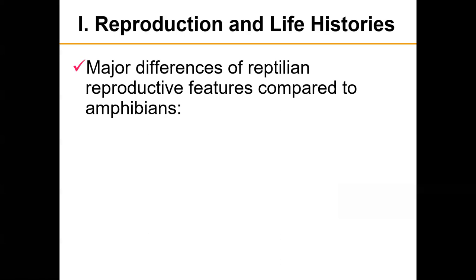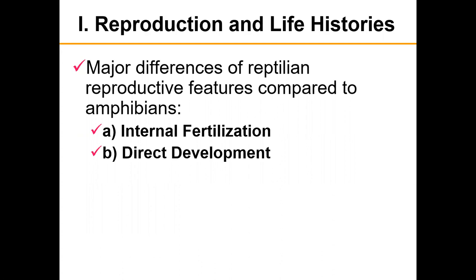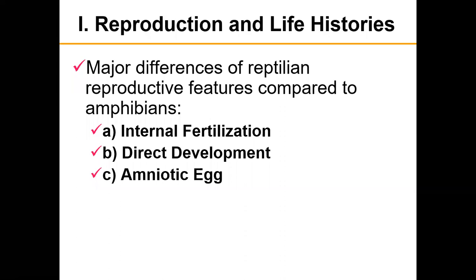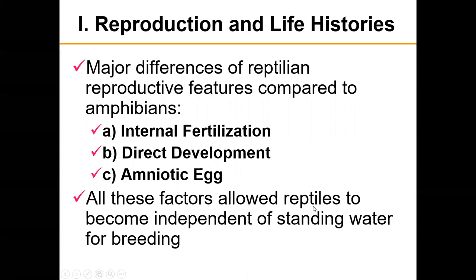We'll first talk about the major differences between reptile reproductive features compared to those of amphibians. First, reptiles have internal fertilization — recall that amphibians had some internal and some external. All reptiles have internal fertilization and direct development; there is no free-living larval stage. We also have the evolution of an amniotic egg, which allows respiration and storage of nitrogenous waste, enabling development on land. This amniotic egg allowed reptiles to become independent of standing water for breeding and diversify during the Permian under drought conditions.